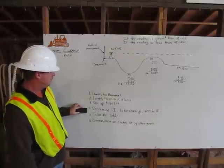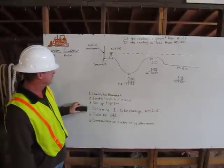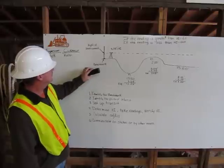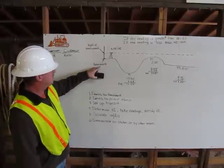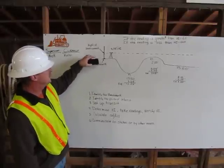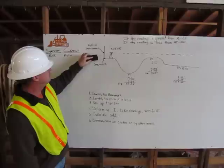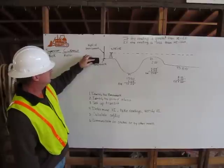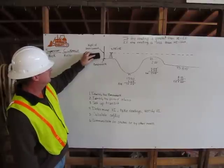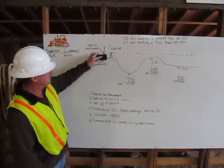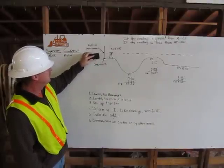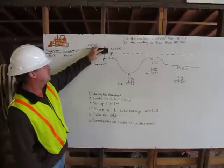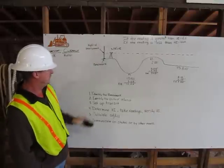Number four, determine the height of instrument from our benchmark. So I'll use an engineer's rule, and I'll measure from the benchmark to the height of my instrument, which will be the scope on the transit, and that reading is 5.25 feet.